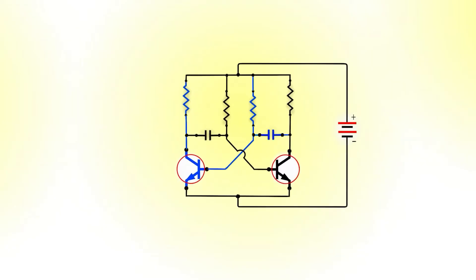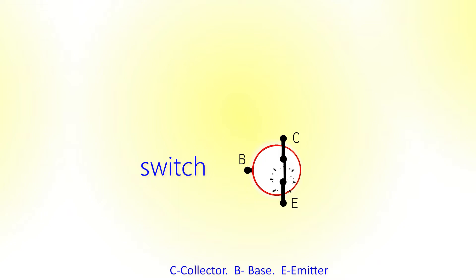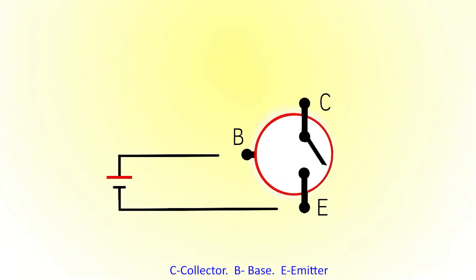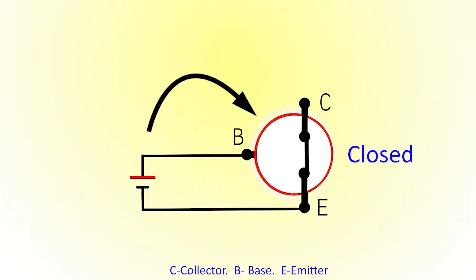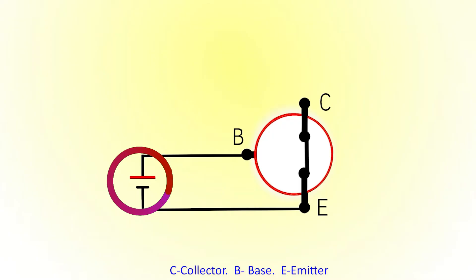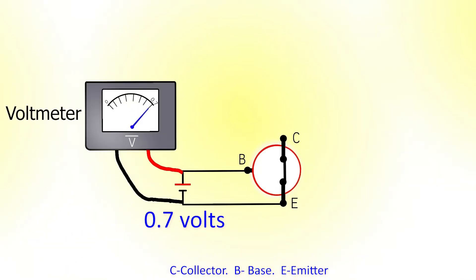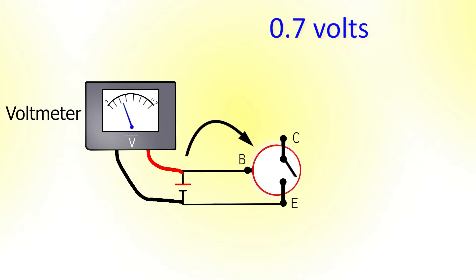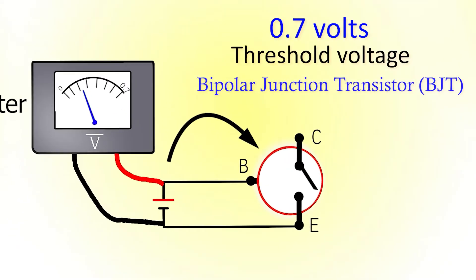Next, let's understand the purpose of the transistor — it is employed as a switch in the circuit. When a voltage is applied across base and emitter, the transistor acts as a closed switch between collector and emitter. This base-to-emitter voltage must be around 0.7V to activate the transistor. But if the voltage given is lower than 0.7V, the transistor turns off. So 0.7V is the threshold voltage for a bipolar junction transistor.